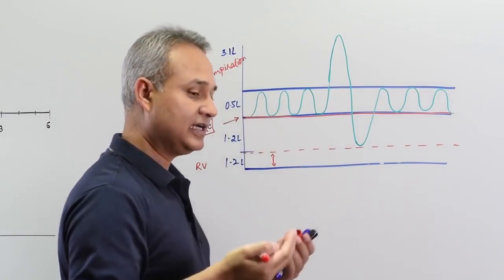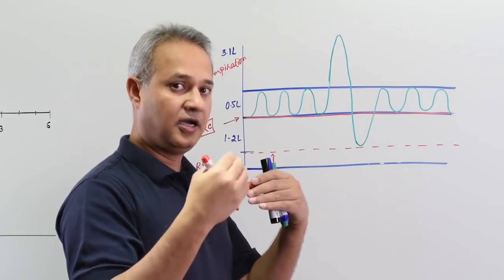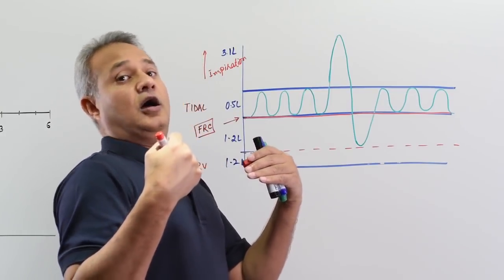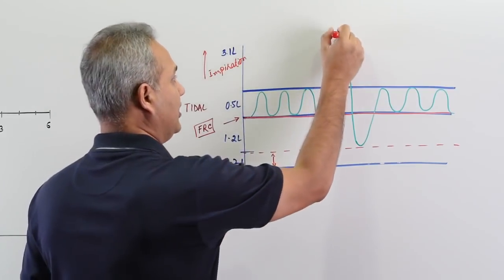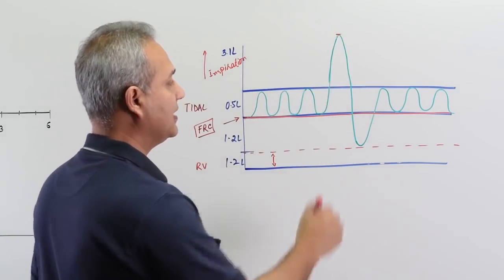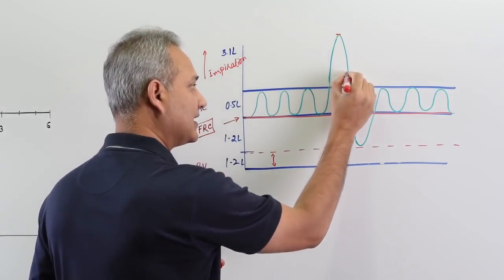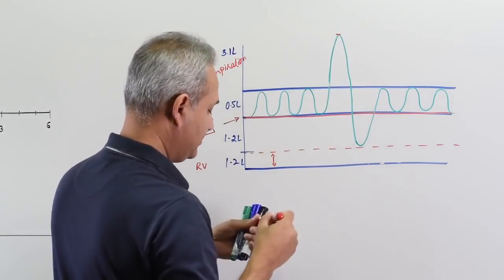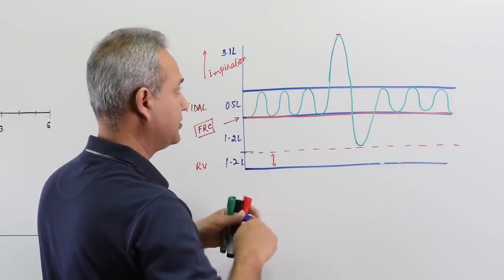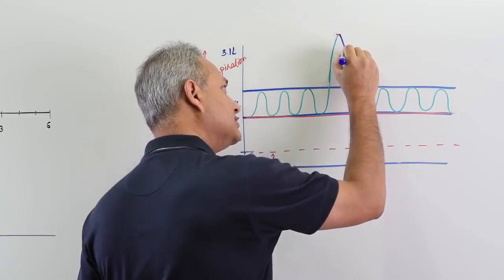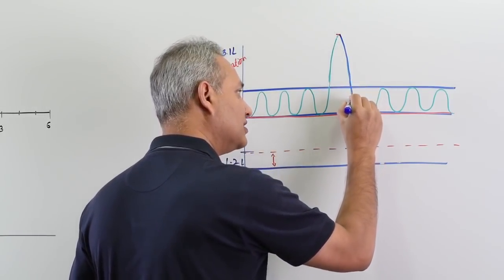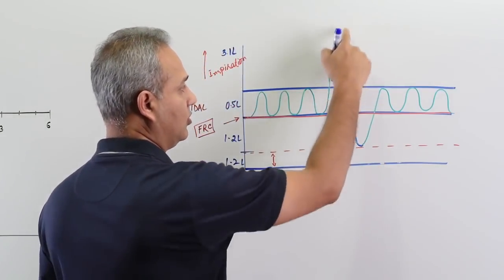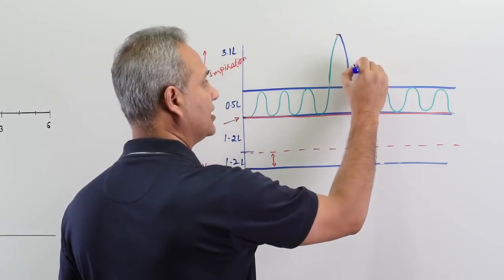The inspiratory reserve volume is what you get if you take a normal breath in quietly and then continue to inspire further with forceful inspiration. Then as you start exhaling and keep going, this whole slope — which includes the inspiratory reserve volume, then the tidal volume, then the expiratory reserve volume — this whole slope is called vital capacity.